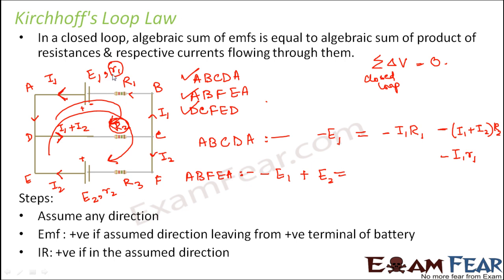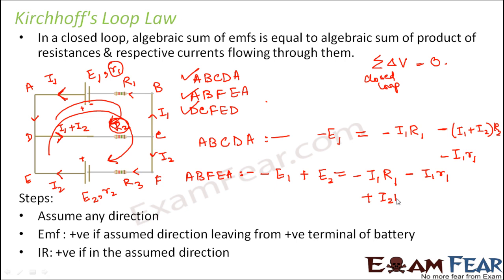The resistances in this loop are R1, R3, r1, and r2. For R1: current I1 is opposite to the assumed direction, giving −I1·R1. For r1: also opposite, giving −I1·r1. For R3: current I2 is along the assumed direction, giving +I2·R3. For r2: current I2 is also along the assumed direction, giving +I2·r2. So the equation for loop A-B-F-E-A is: −E1 + E2 = −I1·R1 − I1·r1 + I2·R3 + I2·r2.